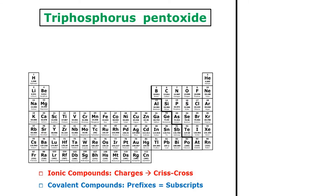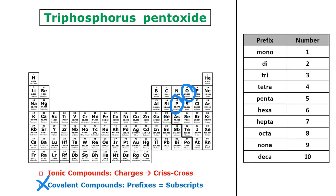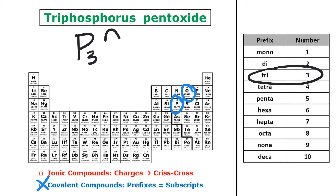Next I have triphosphorus pentoxide — triphosphorus and pentoxide. This is clearly a covalent compound; I can see those prefixes. Triphosphorus: P, and the prefix tri means three. Then pentoxide: the symbol for oxygen, and penta is five. So the formula for triphosphorus pentoxide is P3O5.